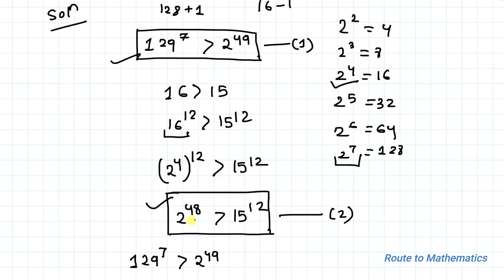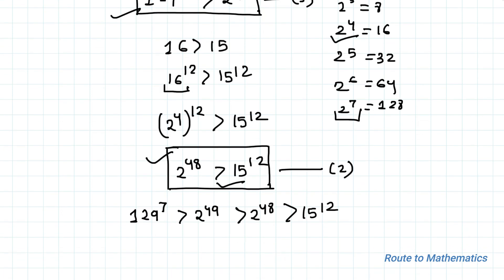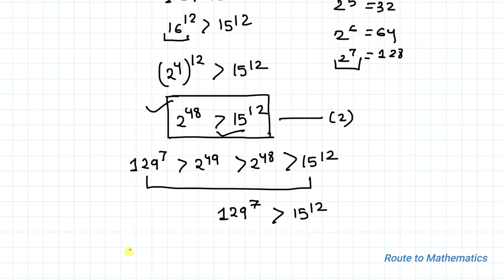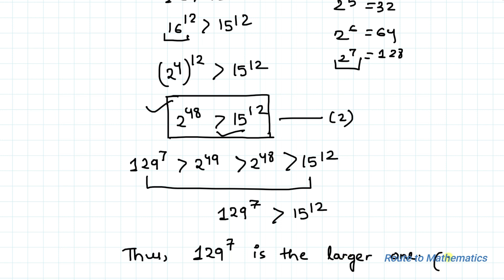Now comparing both inequalities: from Inequality 1 we have 129^7 is greater than 2^49, and obviously 2^49 is greater than 2^48, and from Inequality 2, 2^48 is greater than 15^12. So we can directly conclude that 129^7 is greater than 15^12. Thus 129^7 is the larger number — that is our answer.